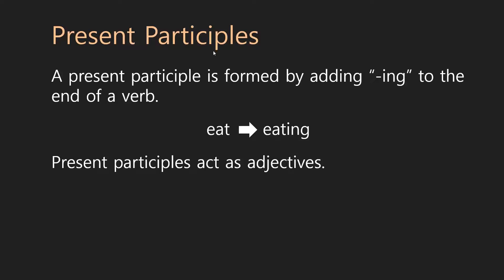Next, we have present participles. Okay. Now, a participle is when you turn a verb into an adjective. And there are two types, present and past. So, we're looking at the present participle first. And a present participle is formed by adding ing to the end of a verb. Okay. So, you'll notice that it's actually the same form as a gerund. Okay. You just add an ing to the verb. So, eat becomes eating. But in this case, rather than being a noun, it acts as an adjective.